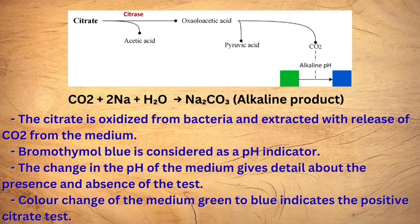The carbon dioxide produced combines with sodium and water. This results in an alkaline product. The condition changes from acidic to alkaline, as citrate-utilizing bacteria oxidize the substrate and release carbon dioxide into the medium, forming sodium carbonate as an alkaline product.